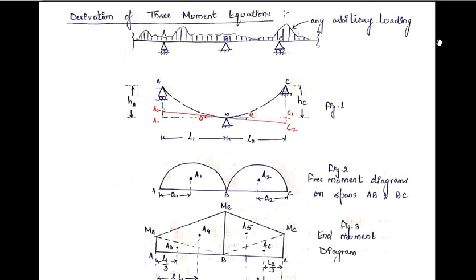Let us derive the three-moment equation. To do so, we consider a continuous beam which is continuous on both the left and right sides. We have taken three consecutive supports of this continuous beam. Suppose this continuous beam is subjected to any arbitrary loading — it can be UDL, point load, UVL, an inclined load, or any other kind of load. We assume any arbitrary loading is acting over this continuous beam.